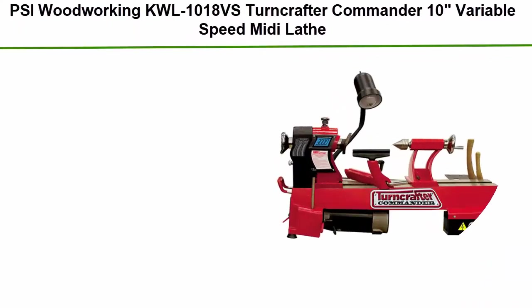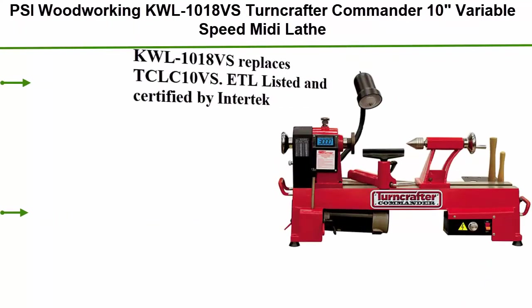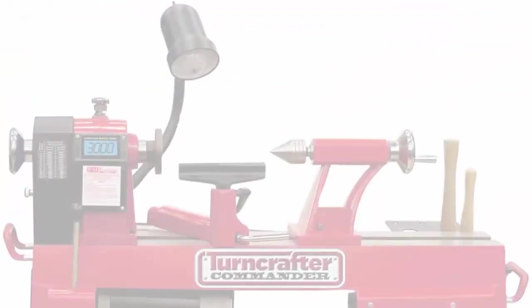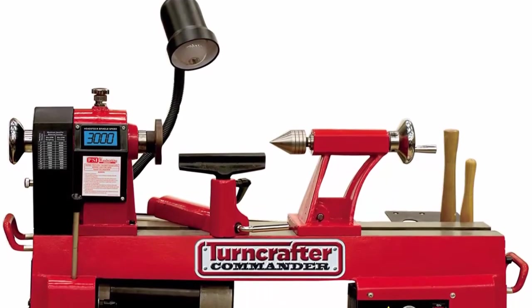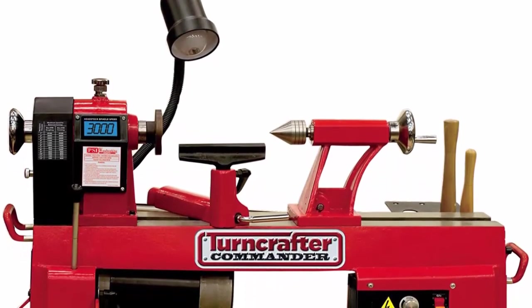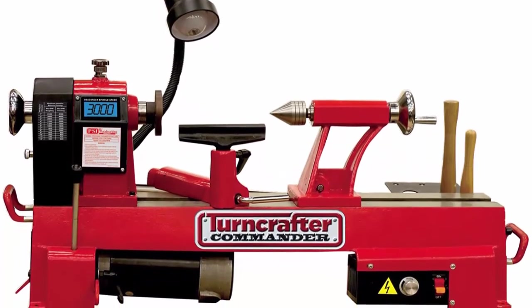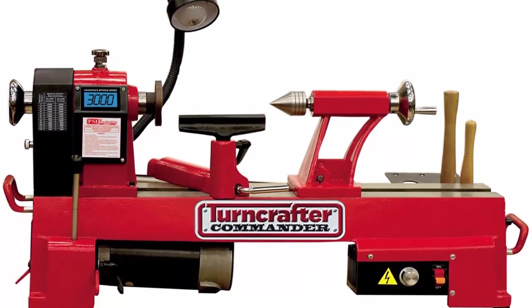Top 2: Cy Woodworking KWL1018VS Turncrafter Commander 10 variable speed midi lathe. KWL1018VS replaces TCLC10VS. ETL listed and certified by Intertek. Powered by three-fourths horsepower variable speed high performance motor, 110V, and SBC microprocessor. 2 belt positions: 500-2000 variable speed.